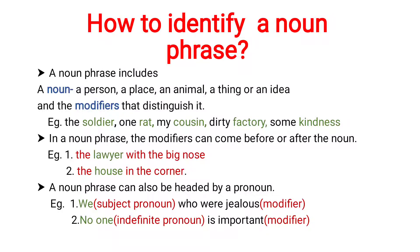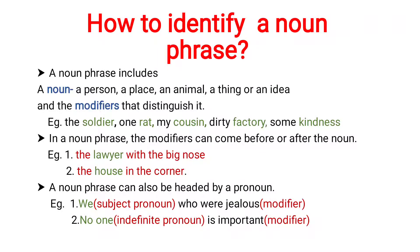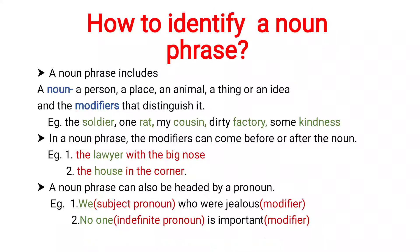Thirdly and most importantly, a noun phrase can also be headed by a pronoun, because pronouns are words used in place of a noun. As we can see in the example 'we who were jealous' — here we do not have any noun, but instead we have a pronoun, so this group of words is referred to as a noun phrase. Similarly, in 'no one is important', 'no one' is an indefinite pronoun, and that is why it is also called a noun phrase. So a noun phrase must have a noun or a modifier, and it may be headed by a pronoun.